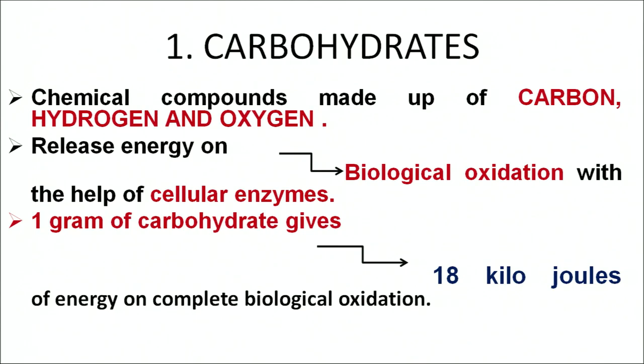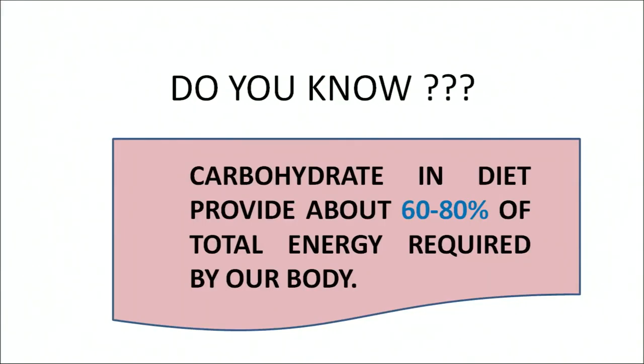The first nutrient is carbohydrates. These are compounds made up of carbon, hydrogen, and oxygen. They release energy on biological oxidation with the help of cellular enzymes. One gram of carbohydrate gives 4 kilocalories of energy on complete biological oxidation. Carbohydrates in the diet provide 60 to 80 percent of our energy — they are the major source of energy in our diet.